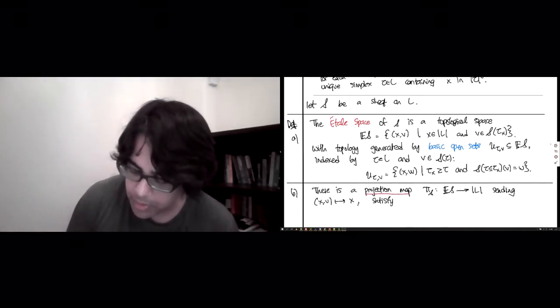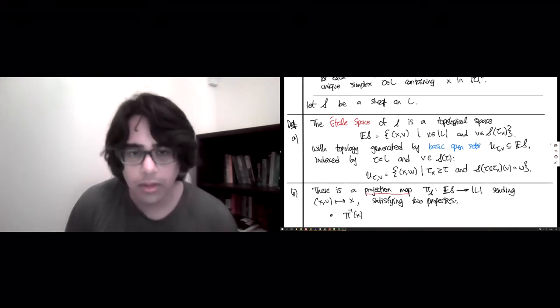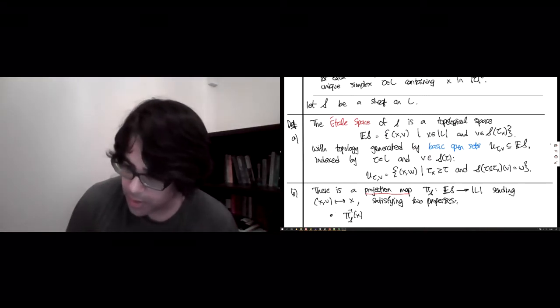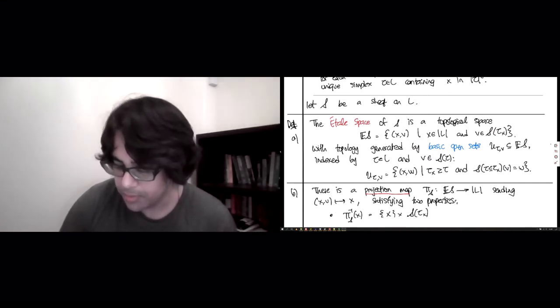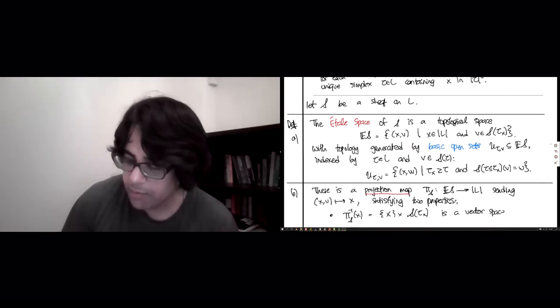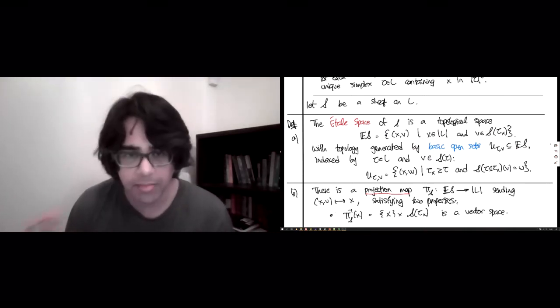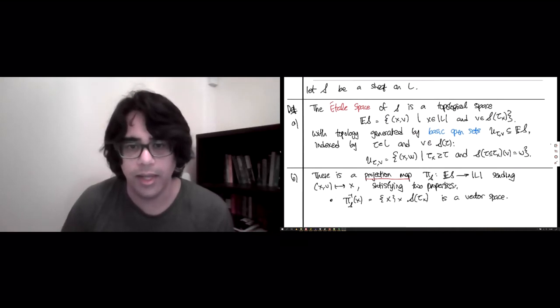So this map has two special properties. So what are the two properties? The first one is that every time you have this map, a fiber of this map, pi inverse x, this is going to be x cross the stock of tau x. So because this is just a point cross a vector space, this fiber over x is a vector space. So every fiber of pi s, no matter what point you chose, has a structure of a vector space, and the vector space that it has a structure of is a stock over the unique simplex containing the point x.